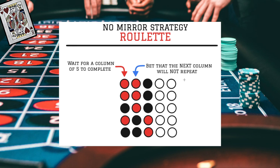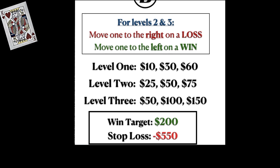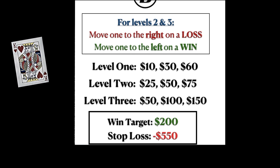Now you're probably wondering what happens if a zero comes up. This is where baccarat and roulette have their differences. In baccarat, if a tie comes up you get your money back. In roulette, if a zero shows up you lose your bet unless you have a bet placed on green number zero. So we are going to add that to our game during our betting sequence.